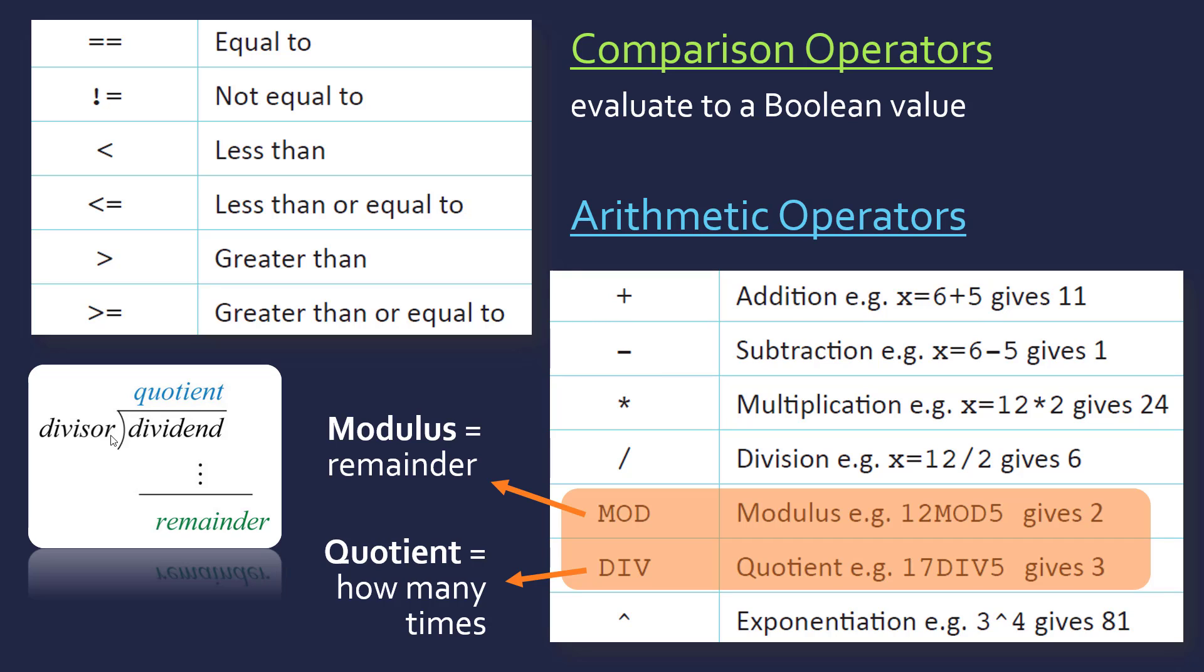So in terms of how this actually works, in a mathematical sense, you've got what's known as the divisor and your dividend. And this returns your quotient, which is just your normal whole number. It's also called integer division, where you just return the integer, not the remainder at all.